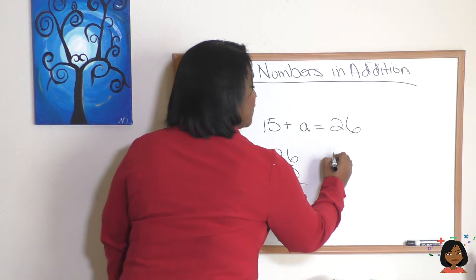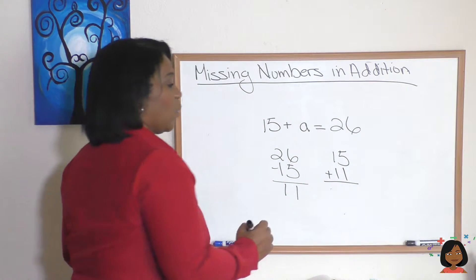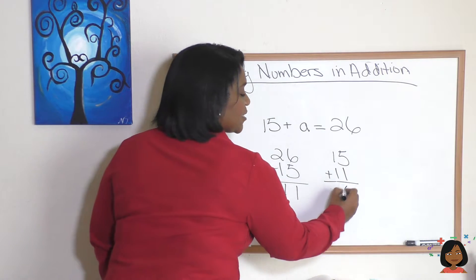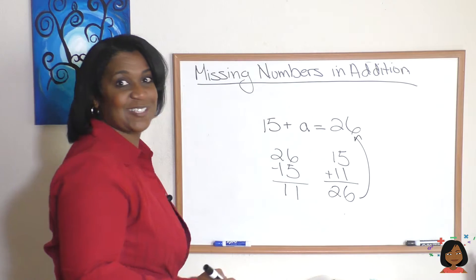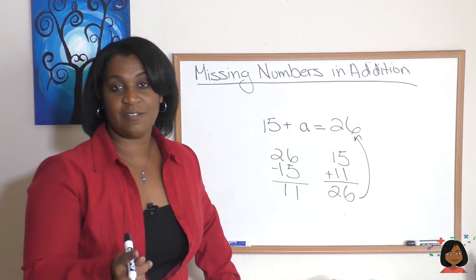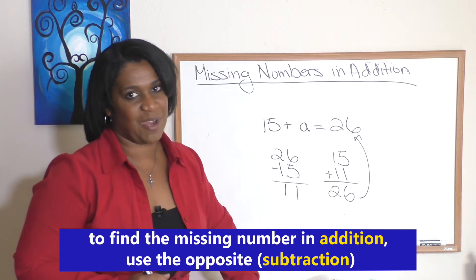Let's do it. 15 plus 11 equals, 5 plus 1 is 6, 1 plus 1 is 2. Hey, look, it actually adds up. So the rule for addition, missing number in addition, do the opposite. Use subtraction.